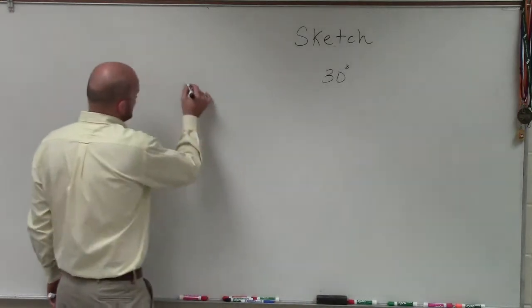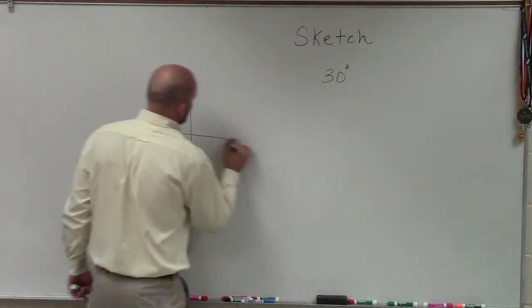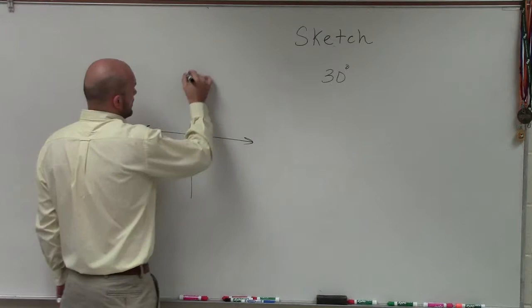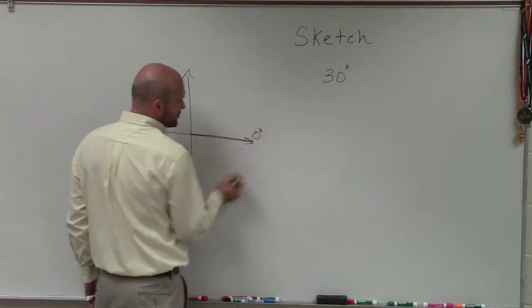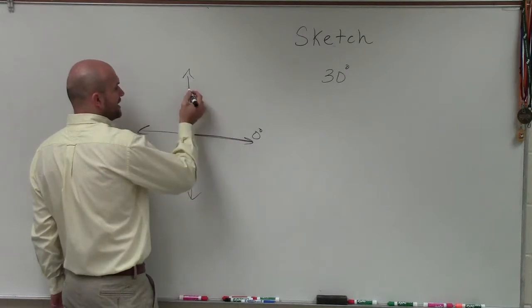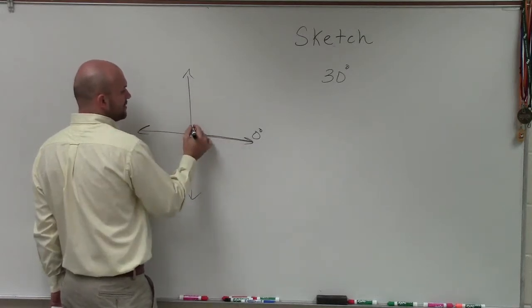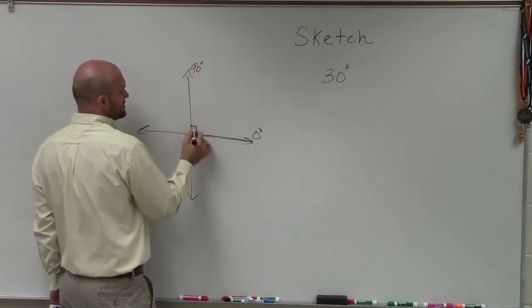Welcome. So how to sketch 30 degrees. I'm going to leave this up here for my remaining videos. But hopefully, if you guys understand, if we start here, that would be 0 degrees. And if I rotate my ray halfway up, that's going to produce a perpendicular line, which we know is 90 degrees.